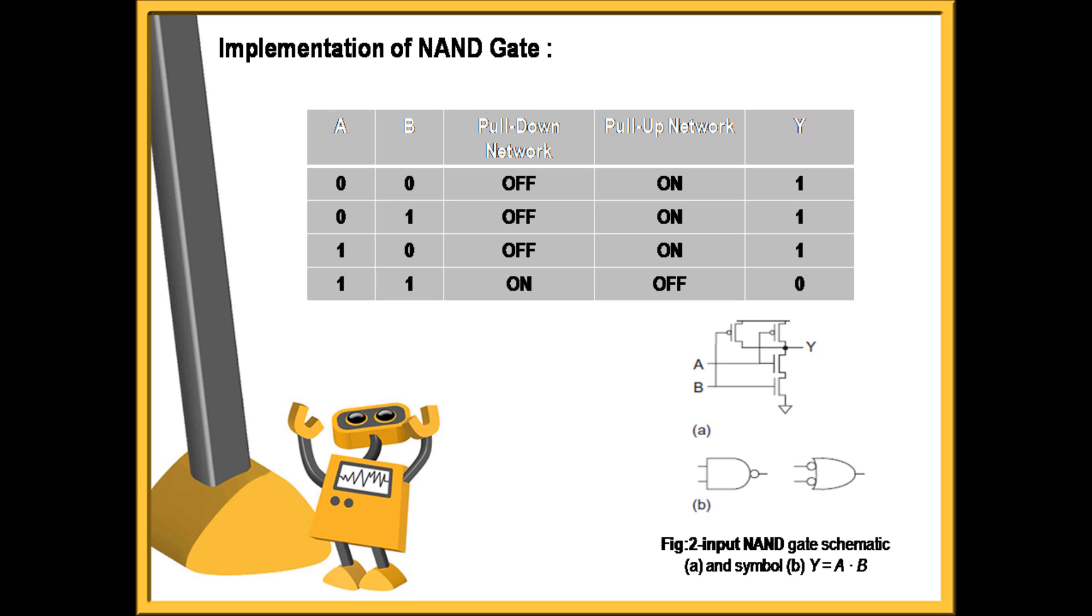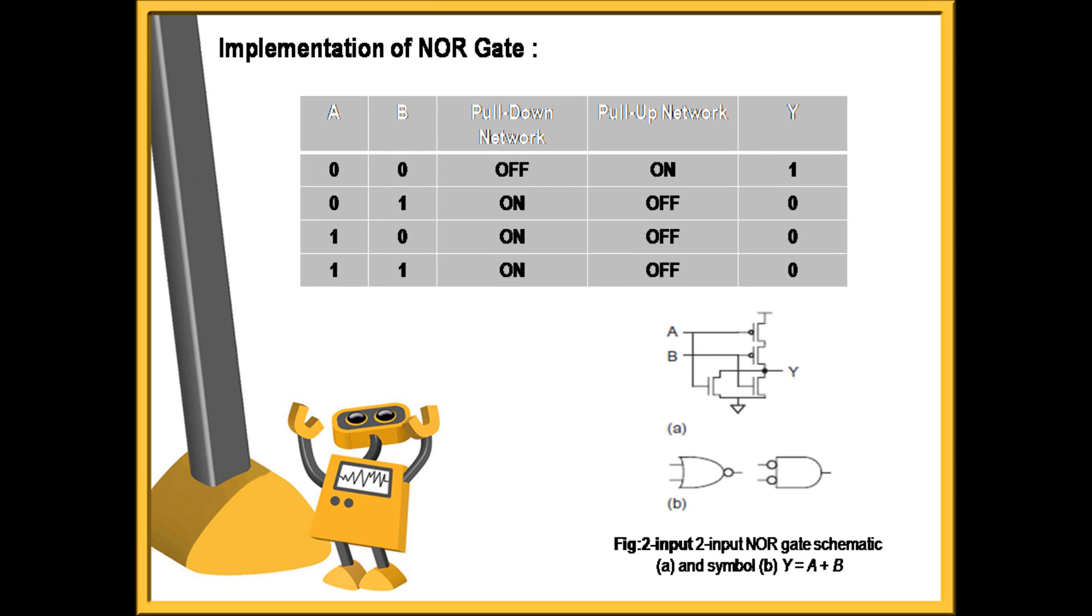Our next gate implementation is NOR gate. For NOR gate, as you can see, the CMOS transistors are connected in a way where the PMOS transistors are connected serially and then the serially connected PMOS transistors are connected to parallelly connected NMOS.